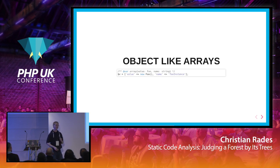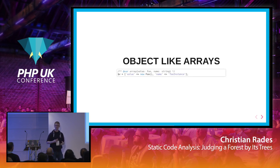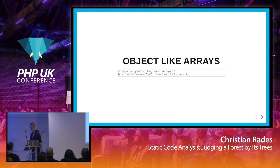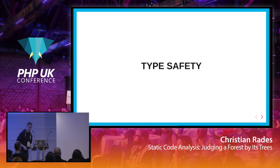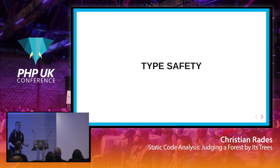Psalm knows about assertions as well. You can assert that an array has a key-value pair, say `value` and an object type `Foo`. Once you've run this assertion on your input data, all the code that comes after it will be treated as if this is a valid assumption. So you can find even more bugs, and you are essentially forced by Psalm to have proper input validation.